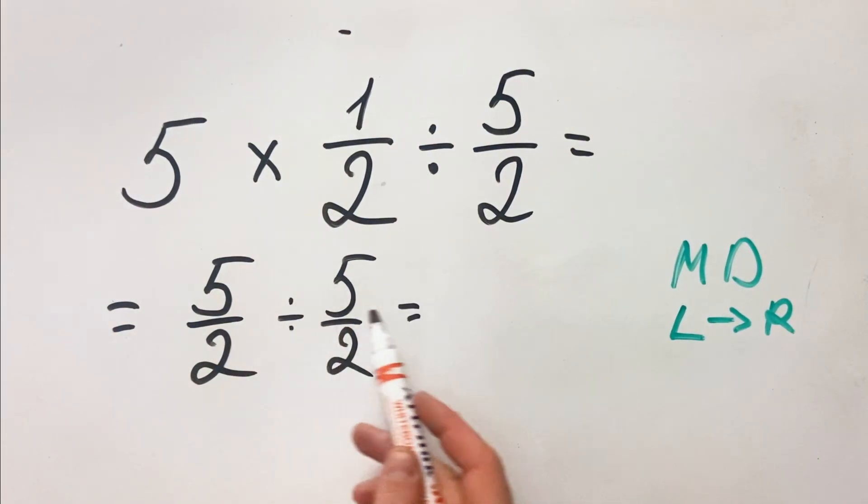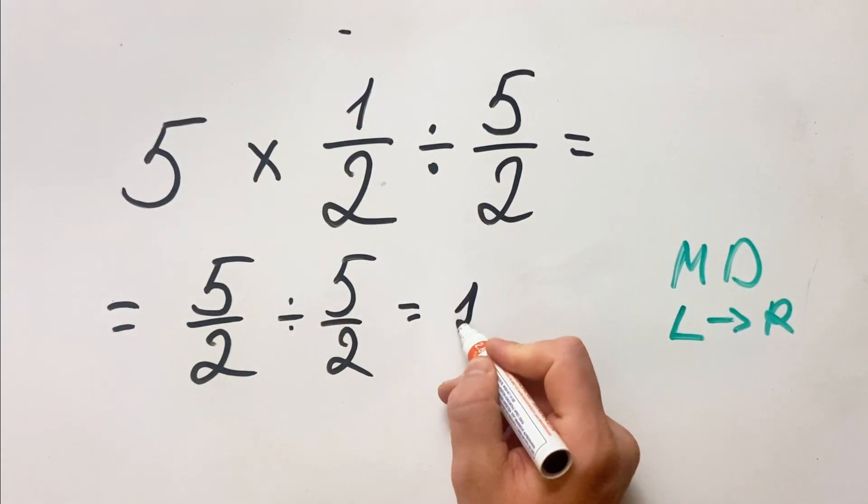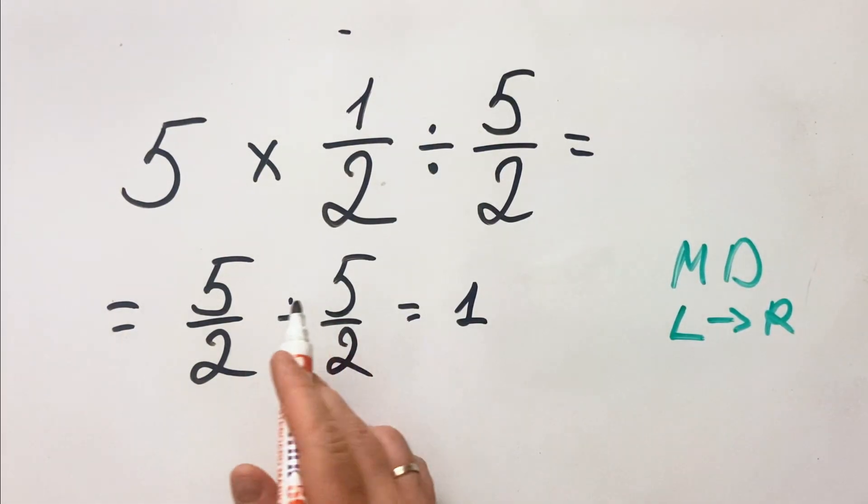Here we can see that the numbers are identical, so 5 over 2 divided by 5 over 2 is identical, so basically you can cancel them and the result would be 1.